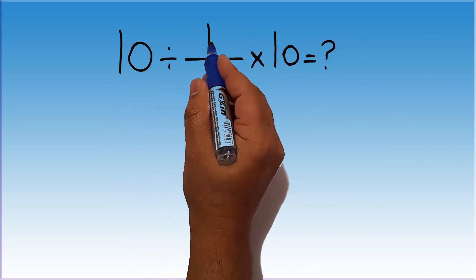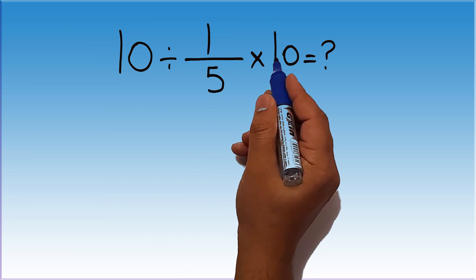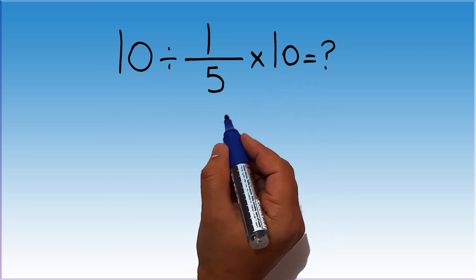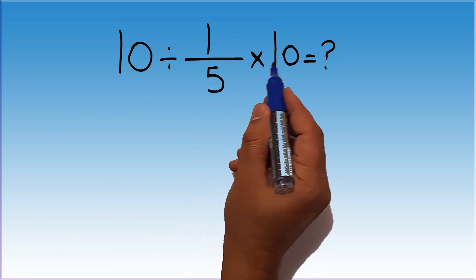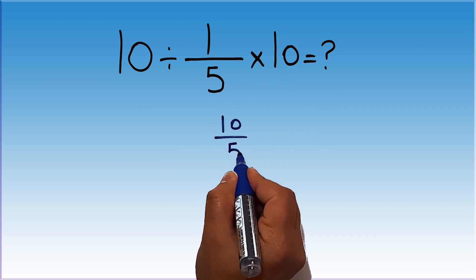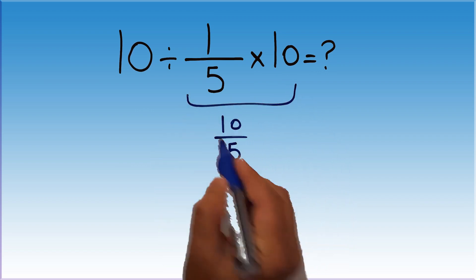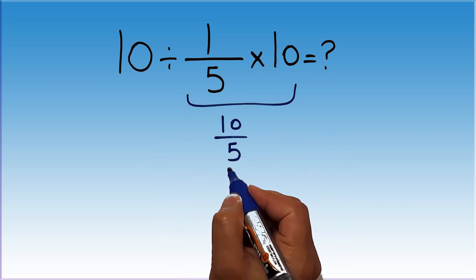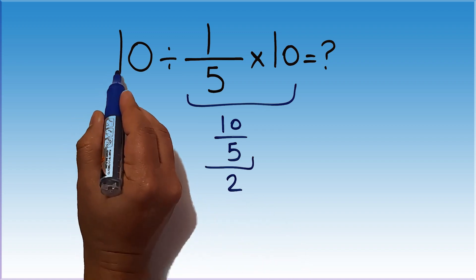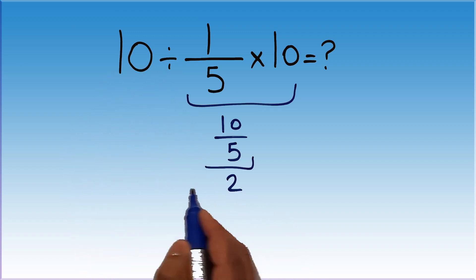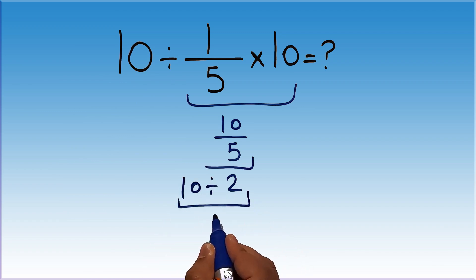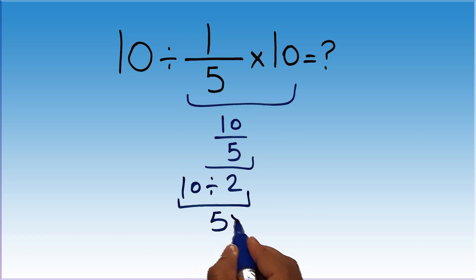10 divided by 1 over 5, times 10. Are you ready to solve? Let's go ahead and get this started. 1 over 5 times 10 — we can write that as 10 divided by 5, and 10 divided by 5 equals 2. So, 10 divided by 2, which equals 5. But this answer is not correct.